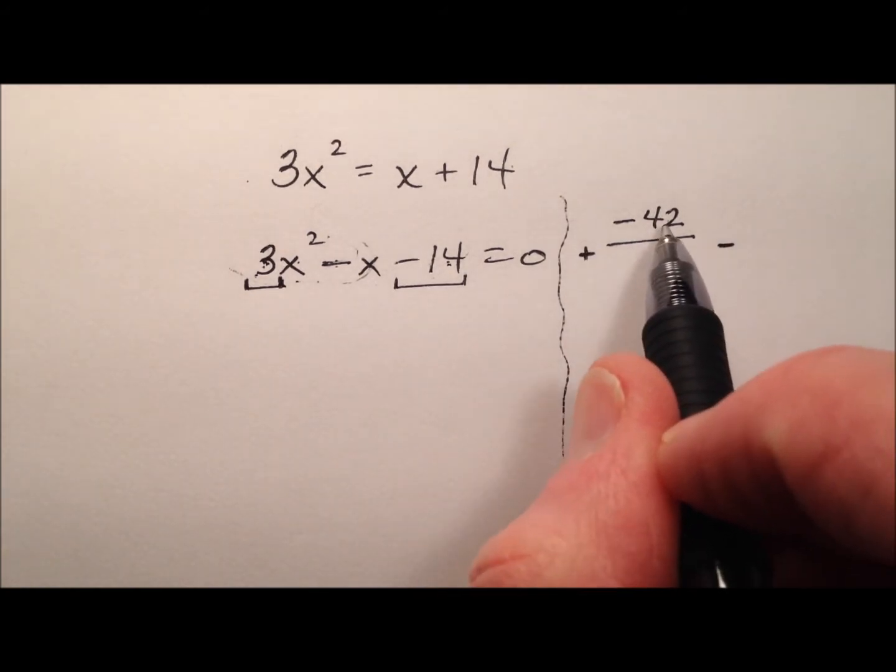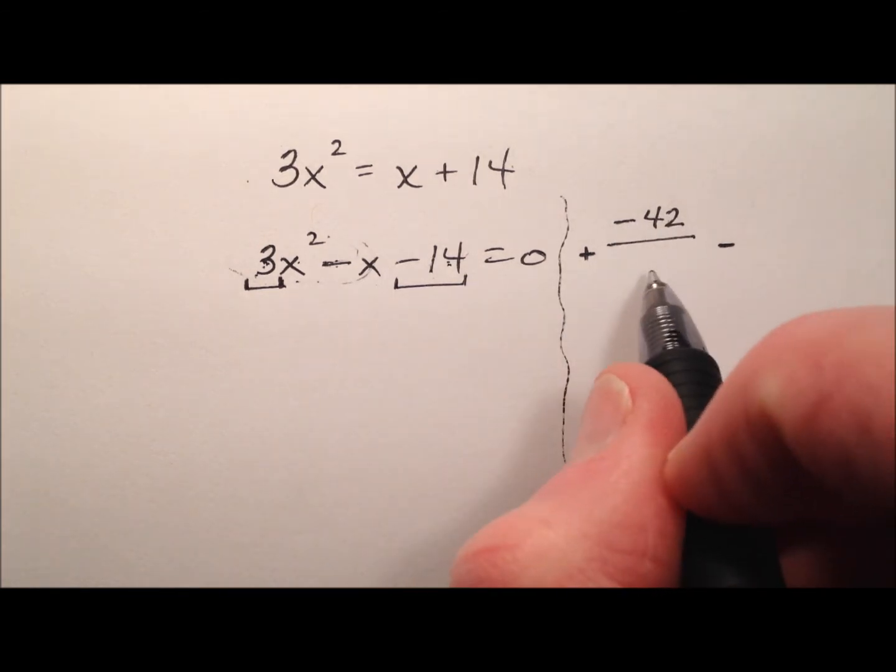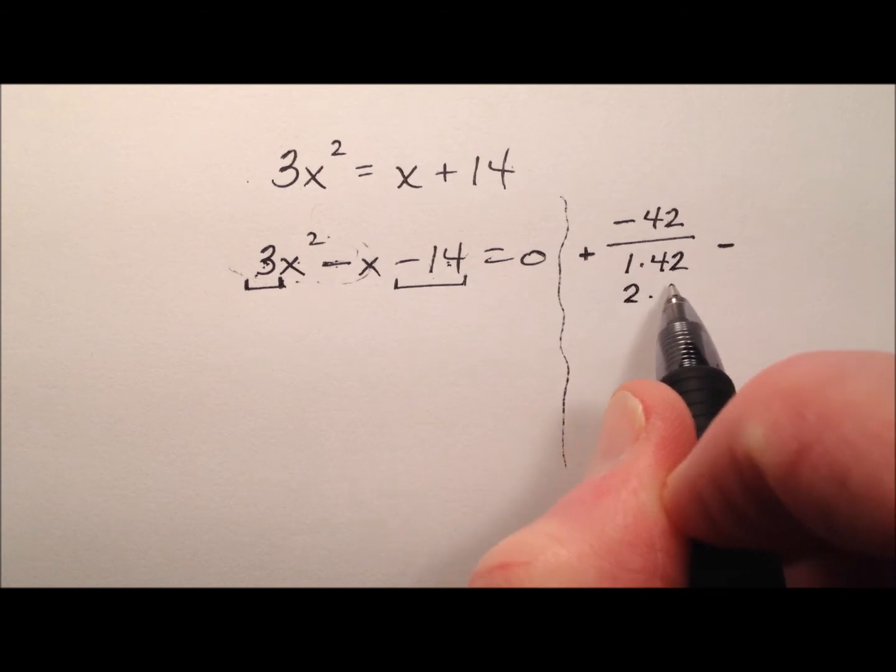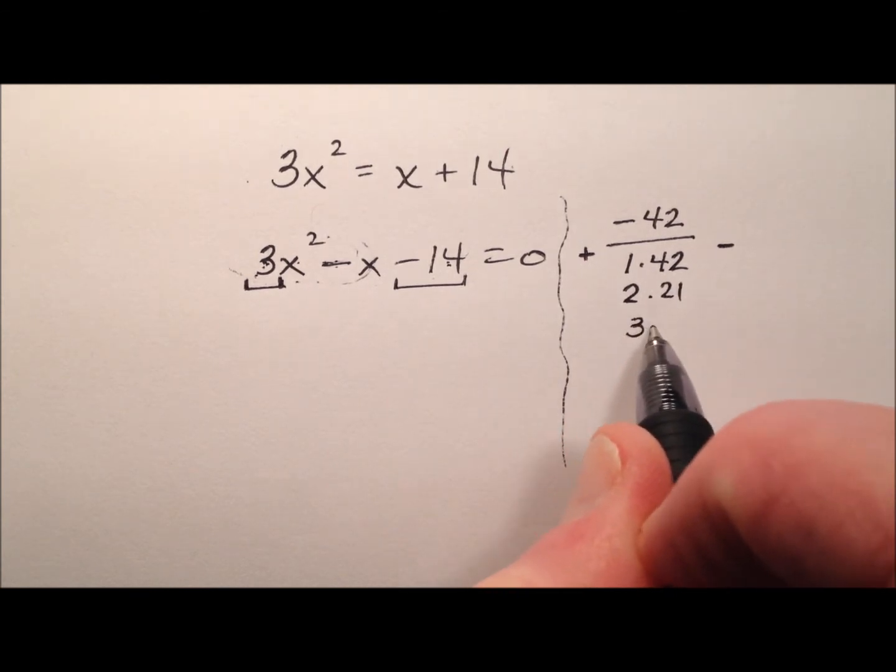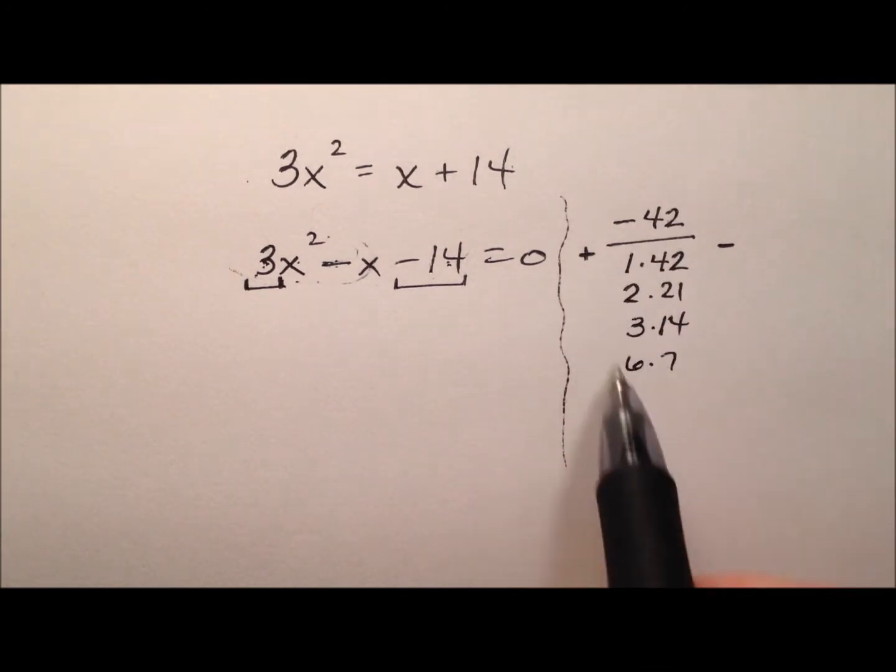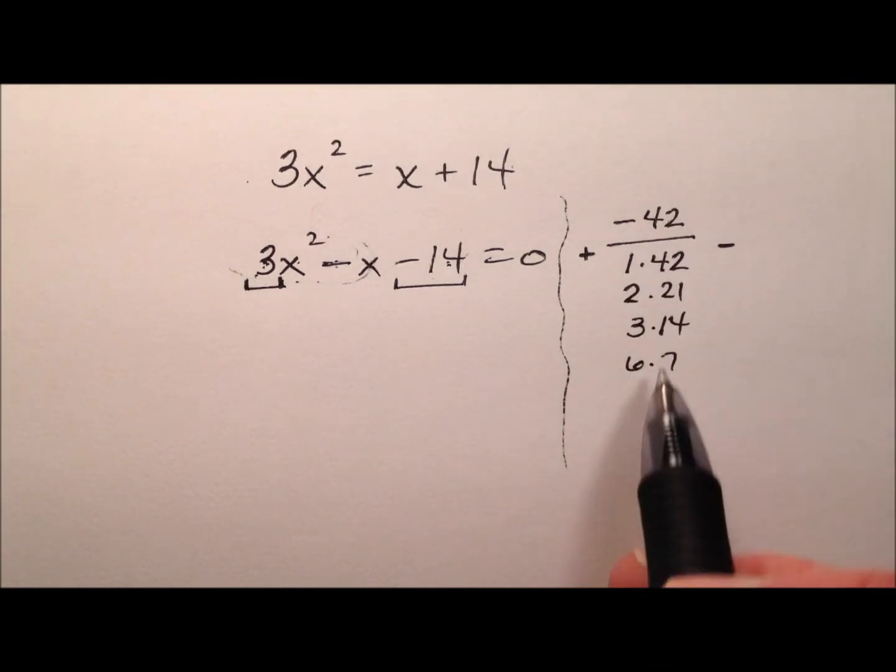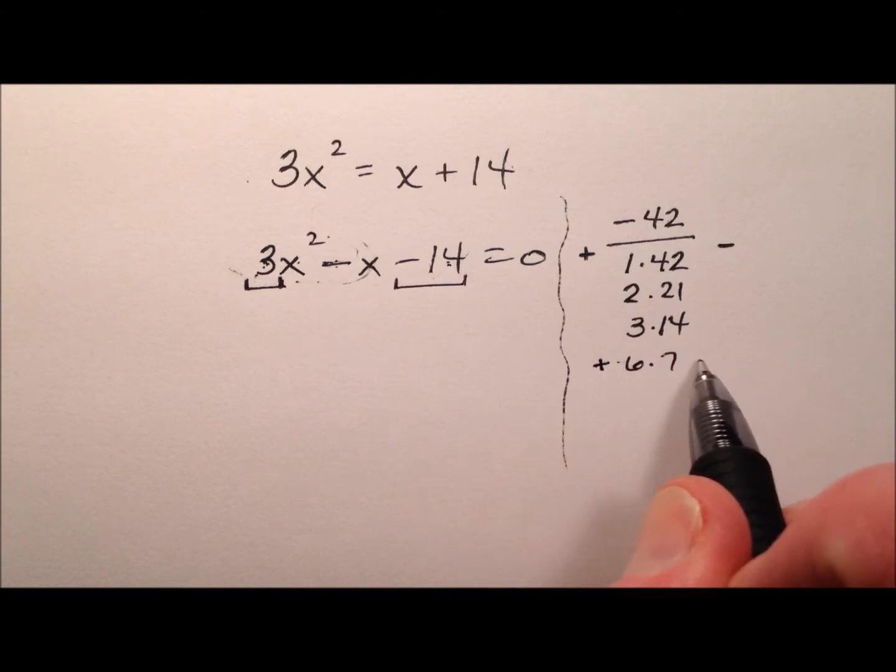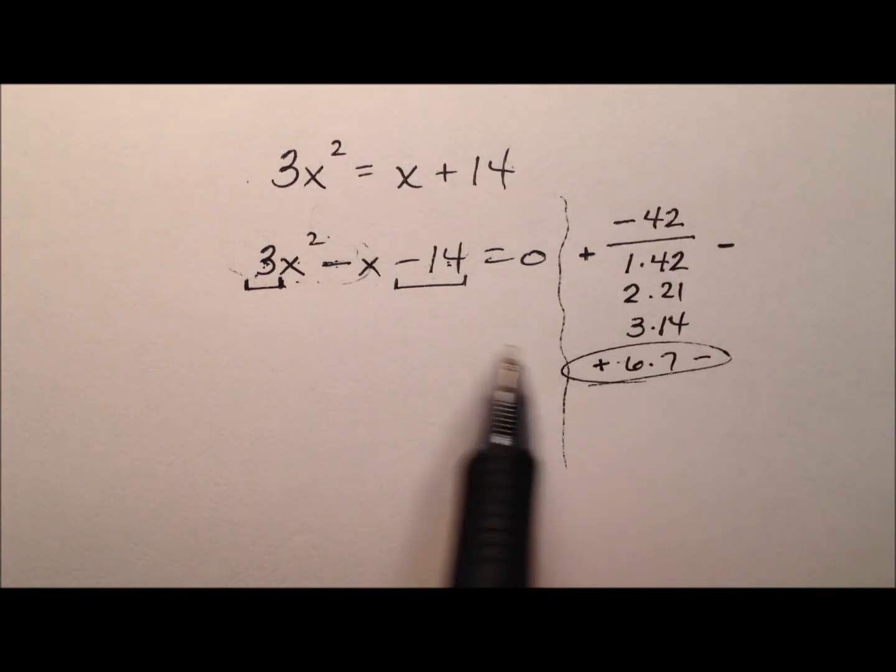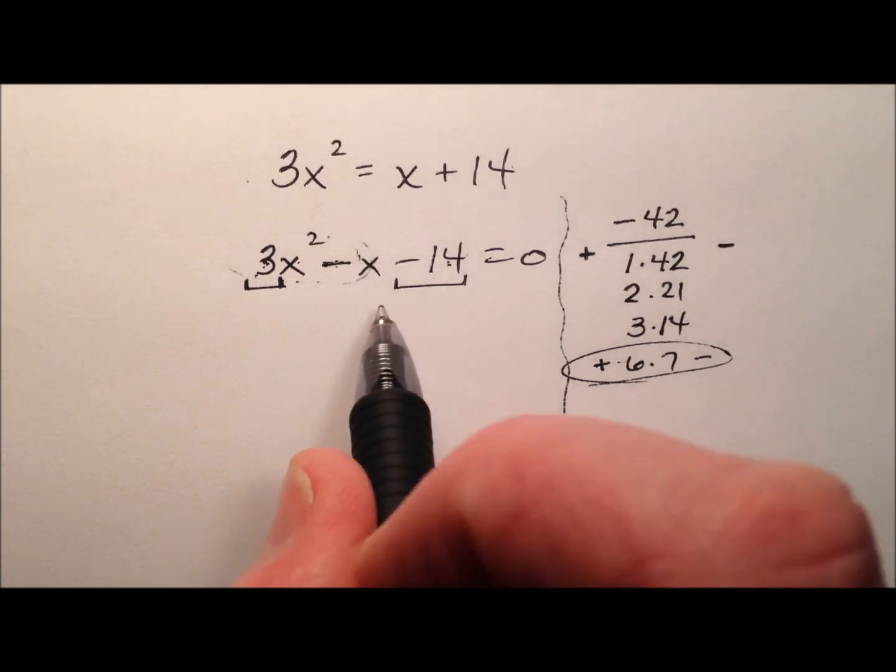So the larger one's negative and the smaller one is positive. What two numbers will multiply to make negative 42 and add to make negative 1? Some students are really good at this because they have good number sense skills. Other students, not so much and that's okay. We've listed all the factor pairs here for 42 and it looks like a positive 6 and a negative 7 will multiply to make negative 42 and add to make negative 1.